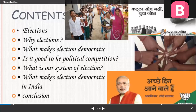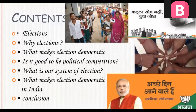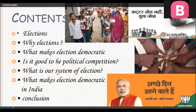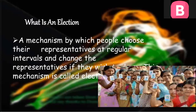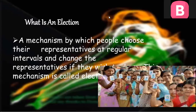You all are aware about these pictures and images — you can easily recognize that these are related with elections. These are the different political parties who contest elections. So now, what is an election? Election means a mechanism, a system by which people choose their representatives.